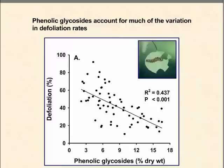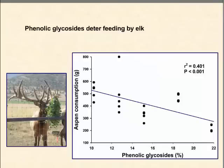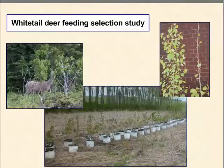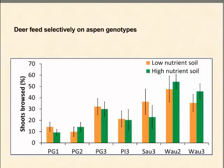Phenolic glycosides also account for much of the variation in defoliation rates by gypsy moths on Aspen. Moving on to mammals, we've done some preliminary studies showing that phenolic glycosides also deter feeding by elk — these were captive elk in southern Utah. We've done more extensive work looking at the impact of plant chemistry on white-tailed deer feeding, and interestingly we found strong preferences shown by deer for different Aspen genotypes.